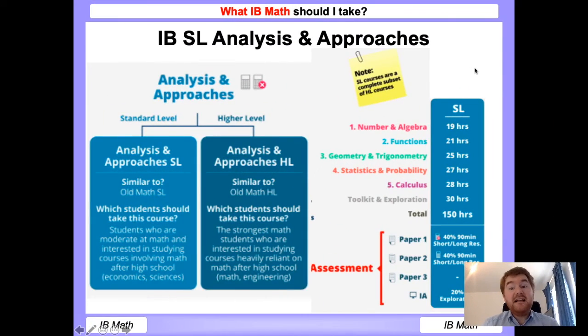Now we have standard level analysis and approaches, and this is probably the closest course to the old standard level on the IB course before 2019. You require a good level of mathematics here, particularly from IGCSE. It's probably one of the most balanced courses. There's a good even distribution of geometry, trigonometry, calculus, number and algebra, and so on.